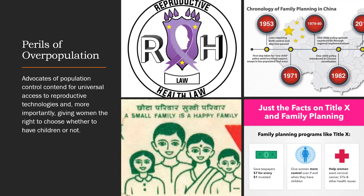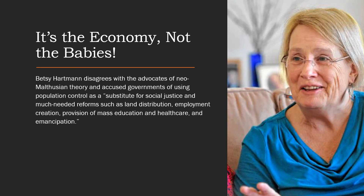These policy formulations lead to extreme policies like the forced sterilization of 20 million violators of the Chinese government's one-child policy. Vietnam and Mexico also conducted coercive mass sterilization. The use of population control to prevent economic crisis has its critics — for example, Betsy Hartman disagrees with advocates of Neo-Malthusian theory and accused governments of using population control as a substitute for social justice and much-needed reforms.